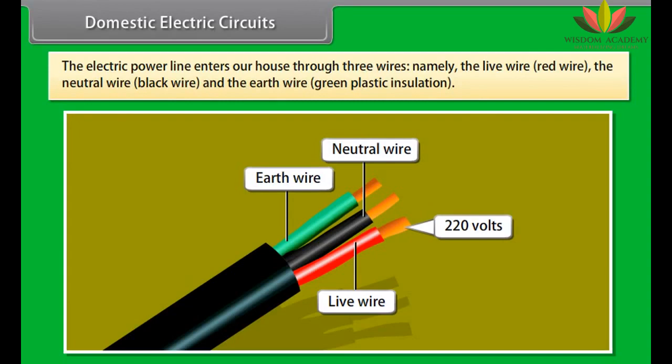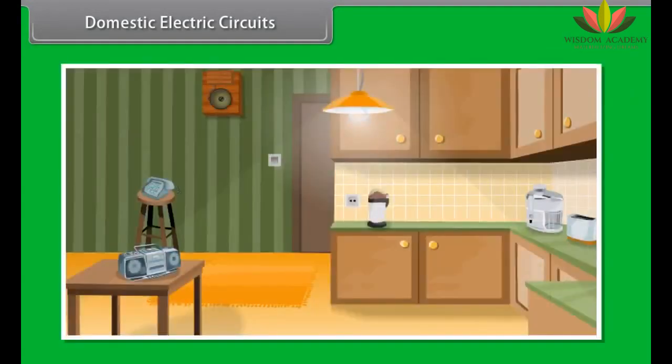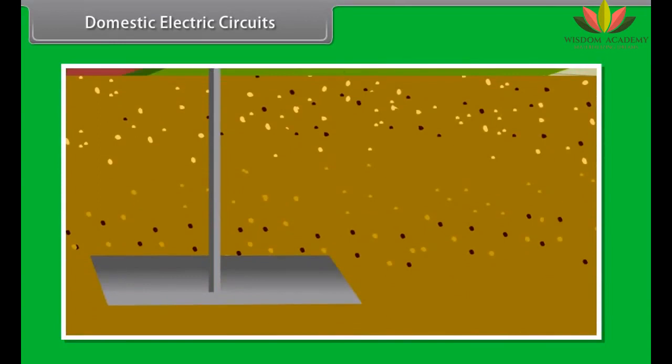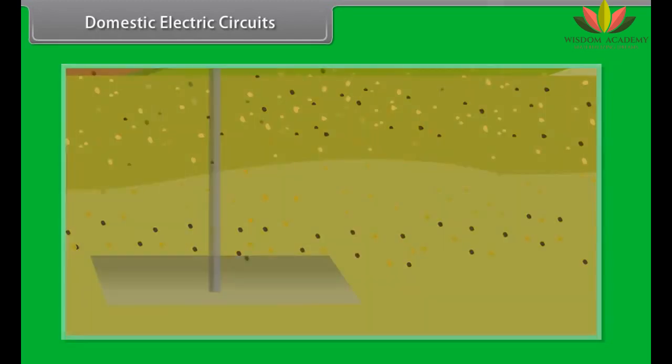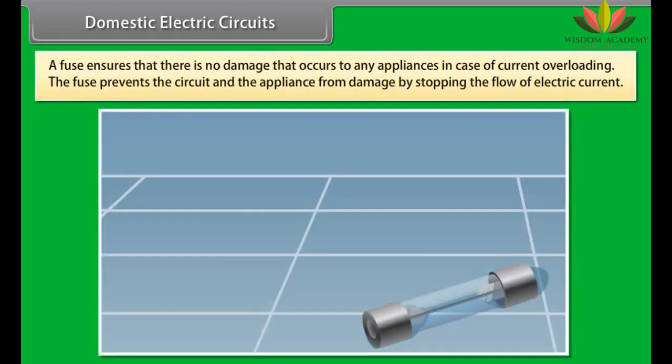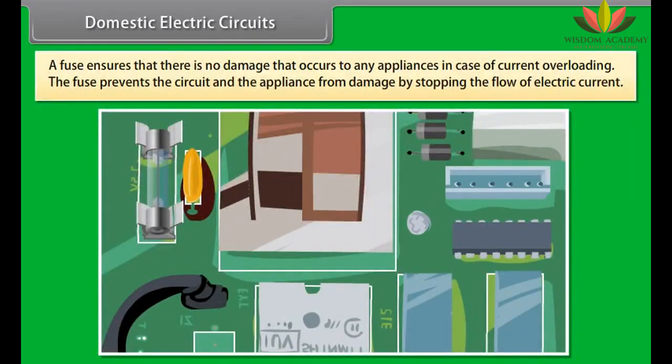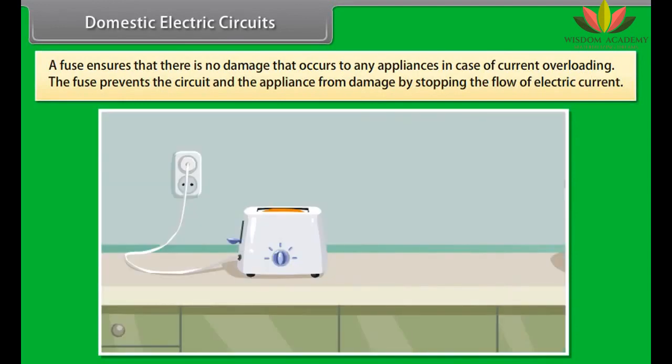Domestic Electric Circuits. Electric power is generated far away from the places it is consumed. At the generating station, the electric power is generated at 11,000 volts with an alternating voltage frequency of 50 hertz. The power is transmitted to the places of consumption at high voltage to reduce the loss of energy during transmission. The electric power line enters our house through three wires, namely, the live wire red wire, the neutral wire black wire and the earth wire green plastic insulation.